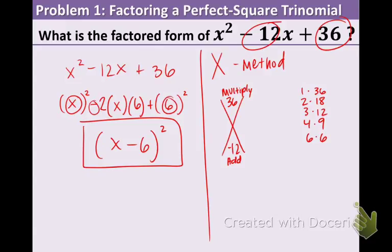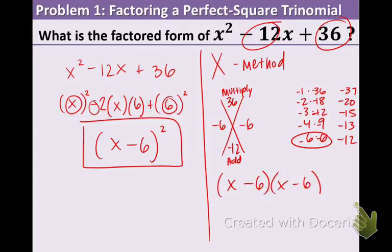They all need to be negative to multiply to a positive. Add them: -37, -20, -15, -13, -12. We found our winner: -6 and -6 work. Put them in the parentheses: (x - 6)(x - 6) or (x - 6)². You can choose which method you like better.